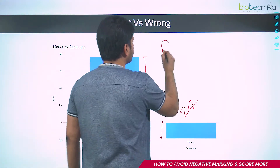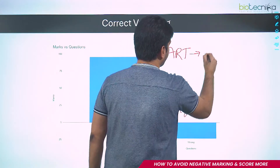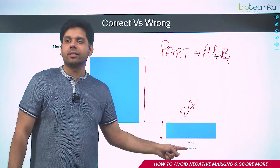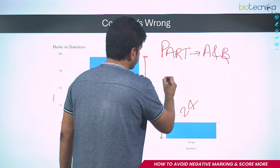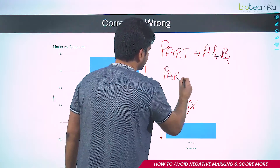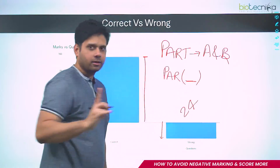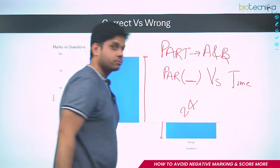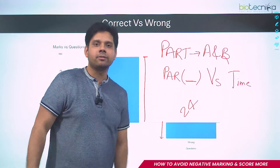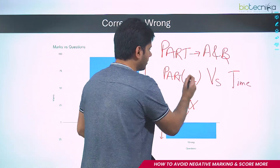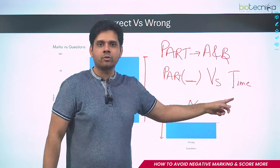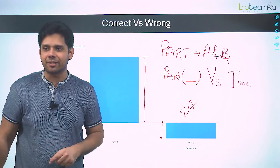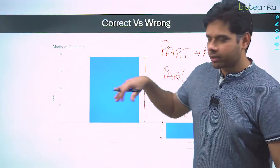If you want more score, attempt Part C over Part A or B — unless you are sure, leave Part A and B. Maximizing Part C is something people get wrong. The time is fixed. So if you want to get more score, go for Part C first and attempt Part A or B only when you are certain.